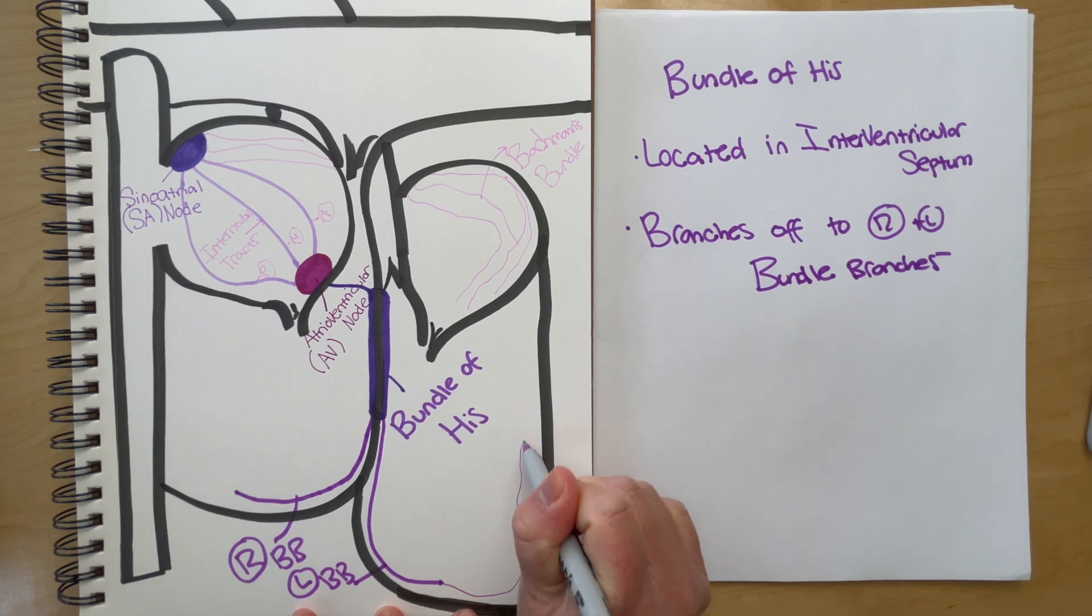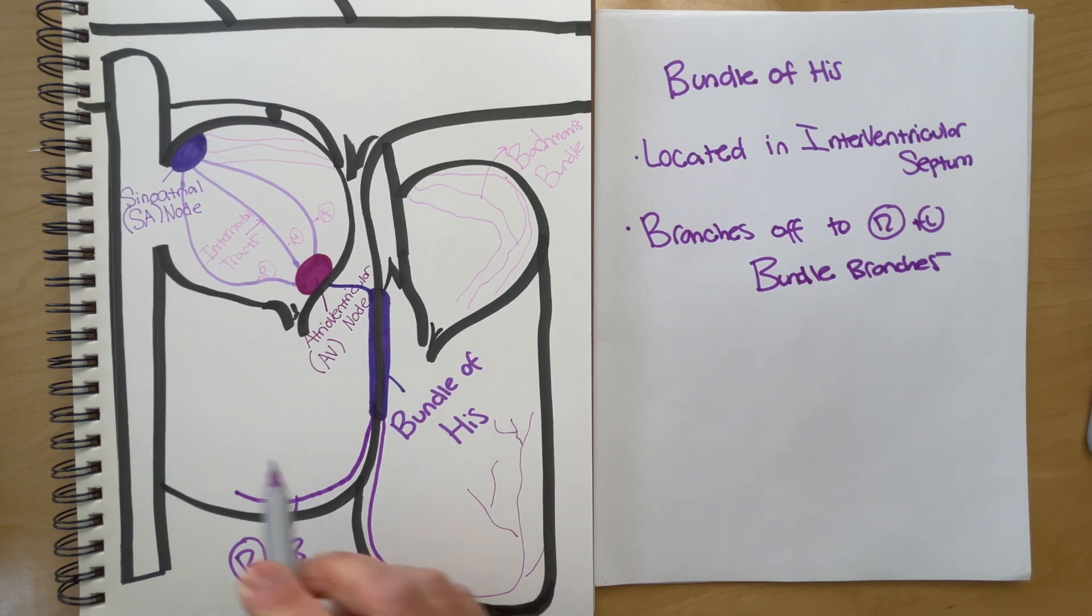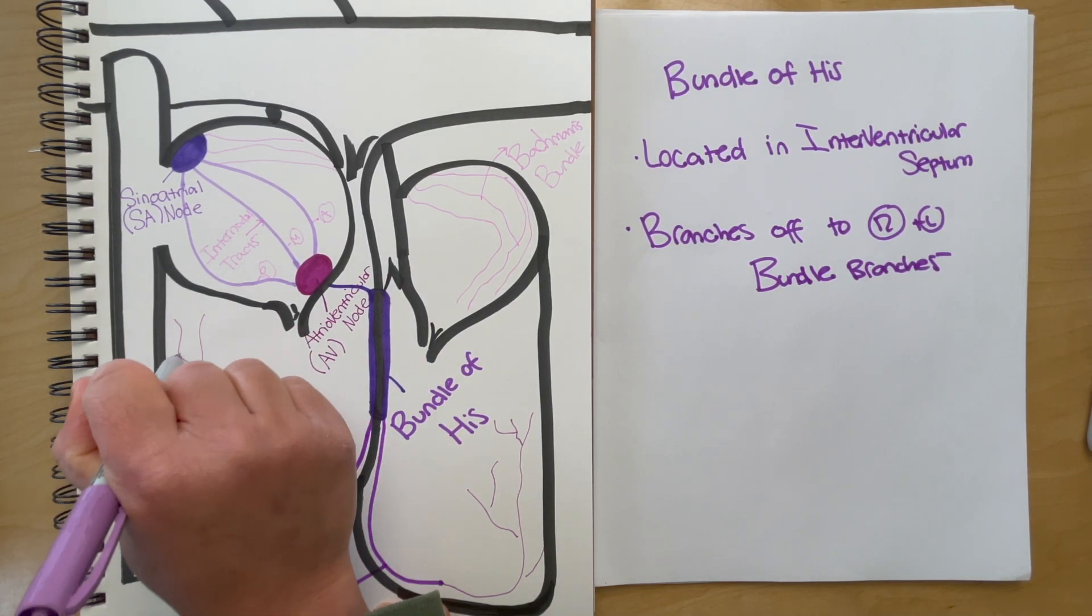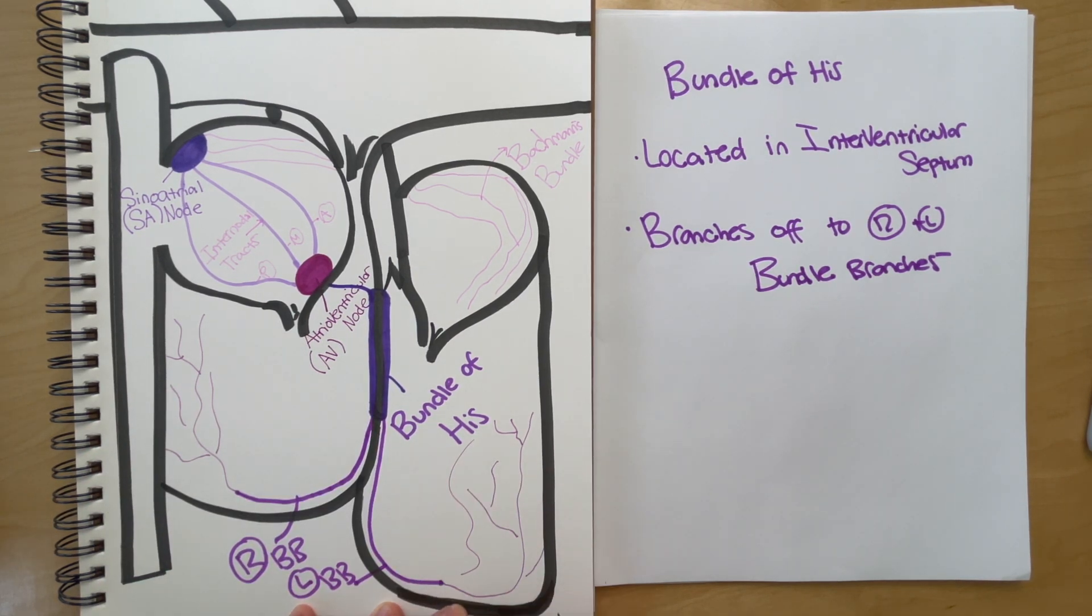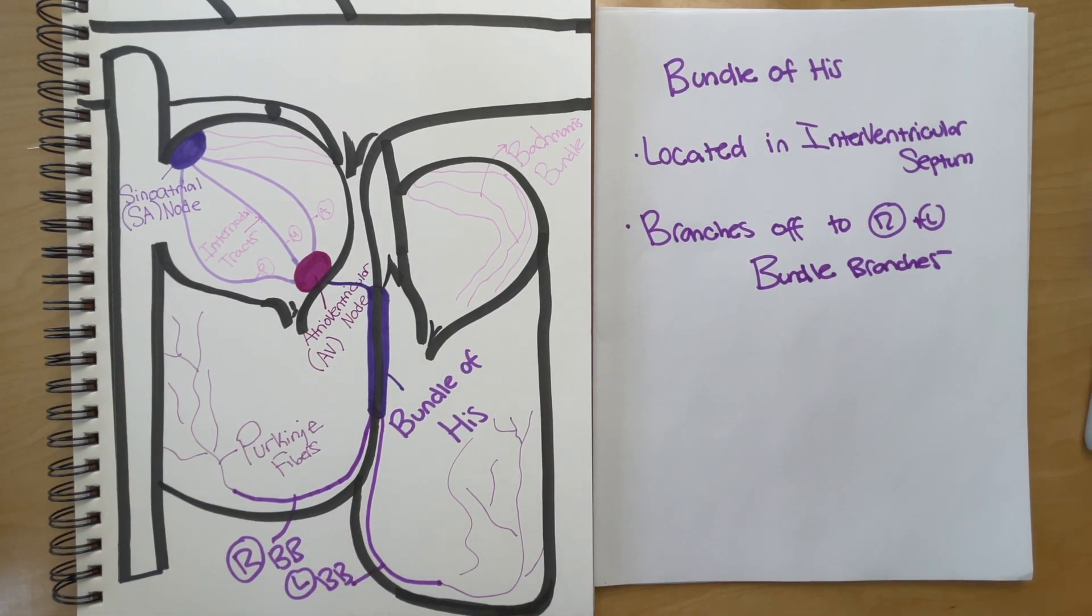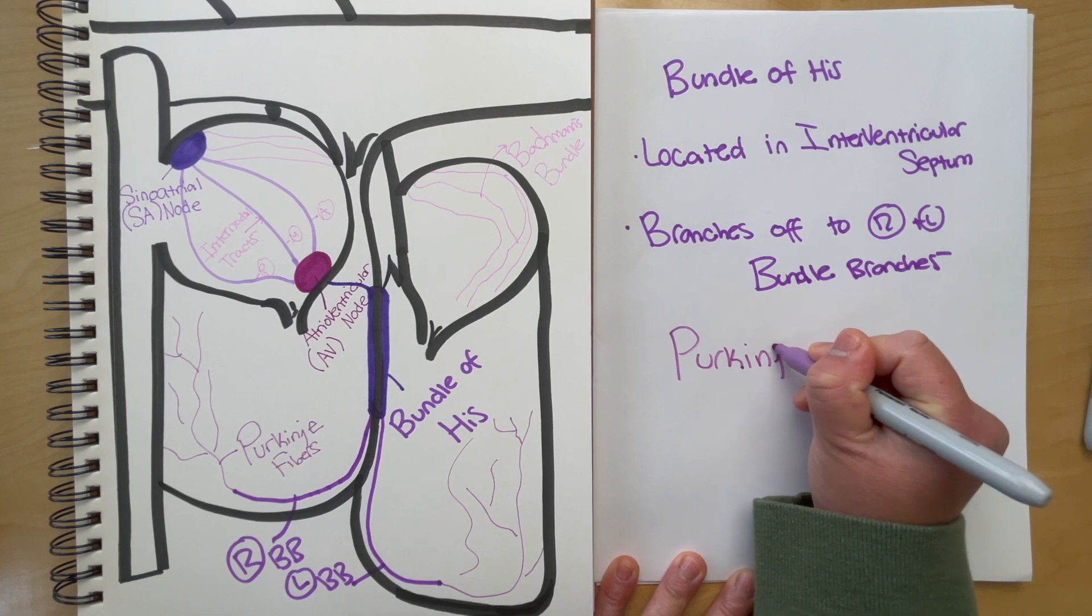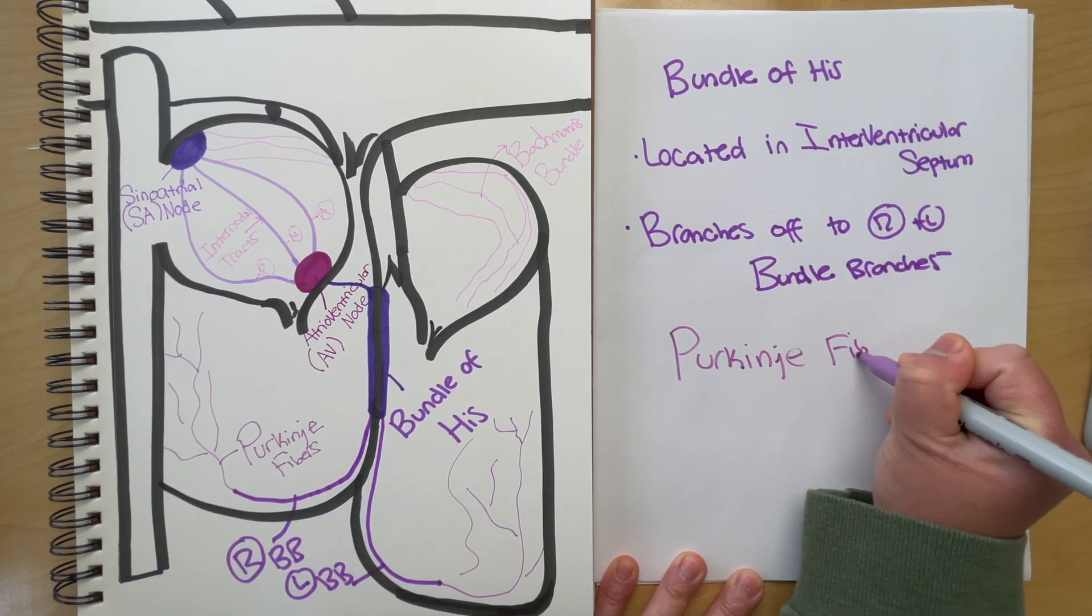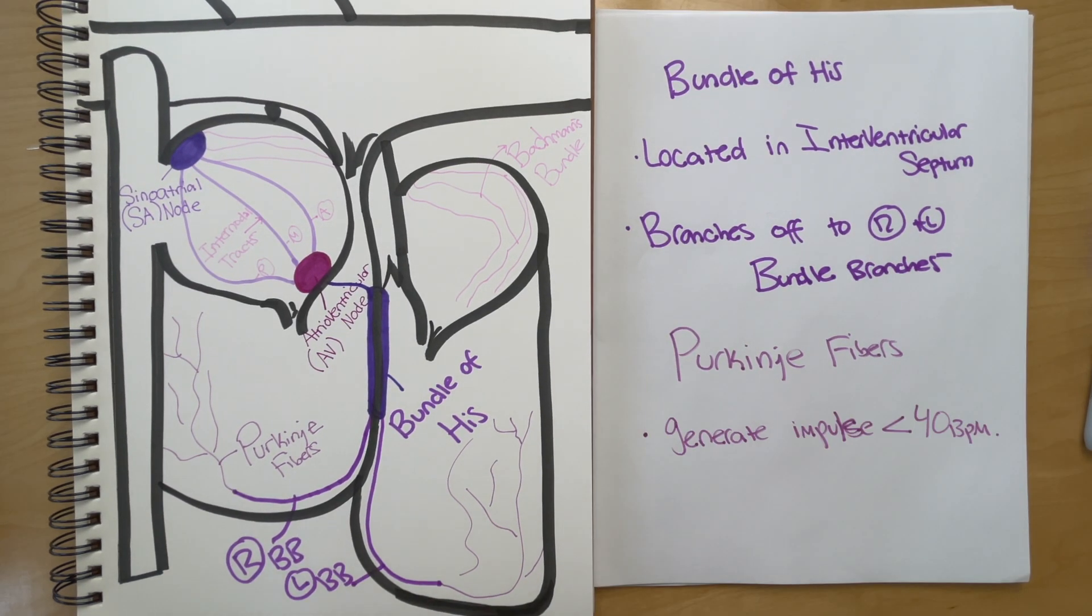Lastly, we have our Purkinje fibers. These come off of our right and left bundle branches on both sides of the ventricles. These are capable of generating impulses of less than 40 beats per minute. This only happens if the SA node fails and the AV node fails. It's not very much, and obviously the person with a heart rate less than 40 needs serious intervention. But still, we're very thankful for the Purkinje fibers because they can really save the day even with their small impulses.